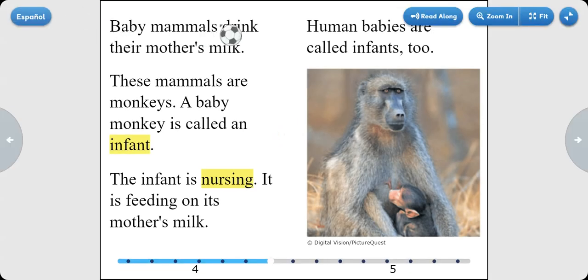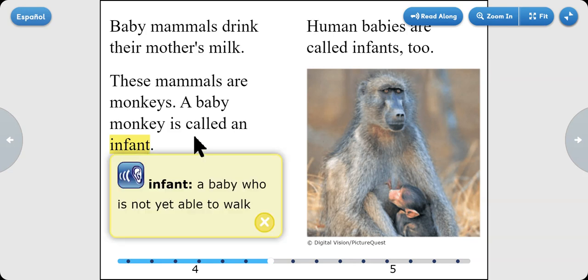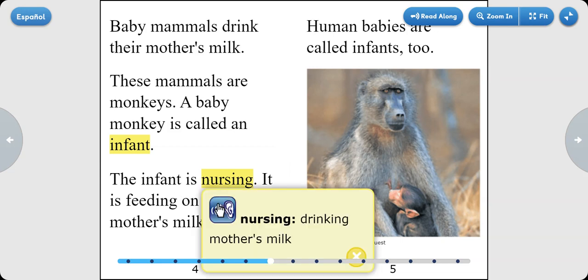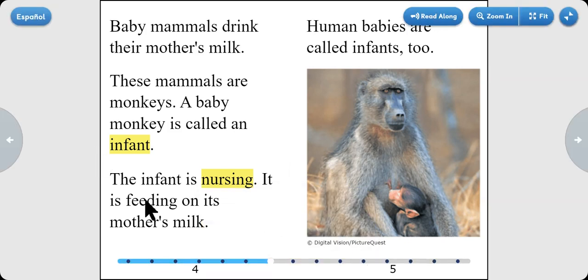Baby mammals drink their mother's milk. These mammals are monkeys. A baby monkey is called an infant - a baby who is not yet able to walk. The infant is nursing, drinking mother's milk. It is feeding on its mother's milk. Human babies are called infants too.